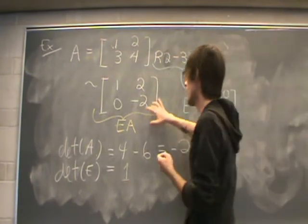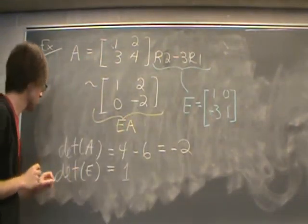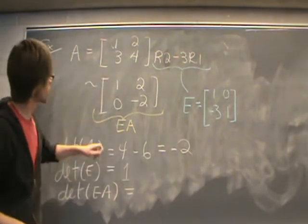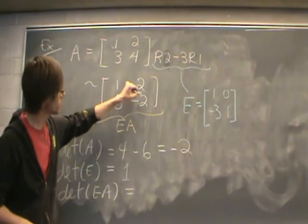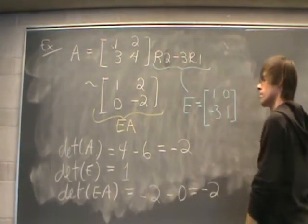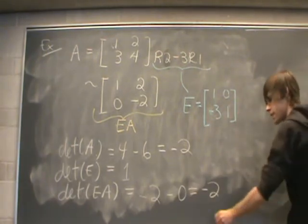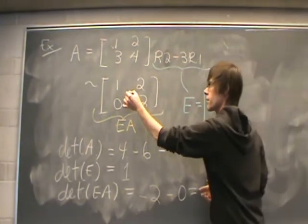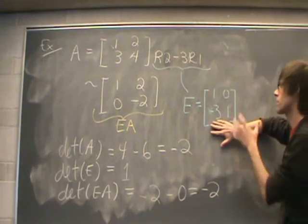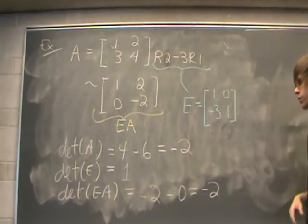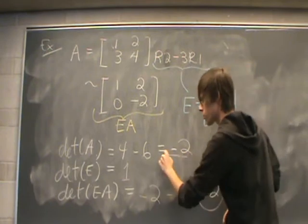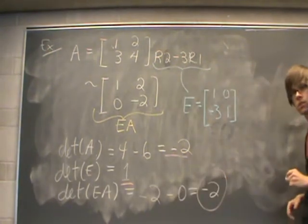We're going to calculate the determinant of this 2 by 2 matrix EA, and the determinant will be negative 2 minus 0. So theorem 1 says the determinant we get from this matrix should be the same as the determinant of E times the determinant of our original. And if we check, that's true — this number here is equal to the product of these two numbers.